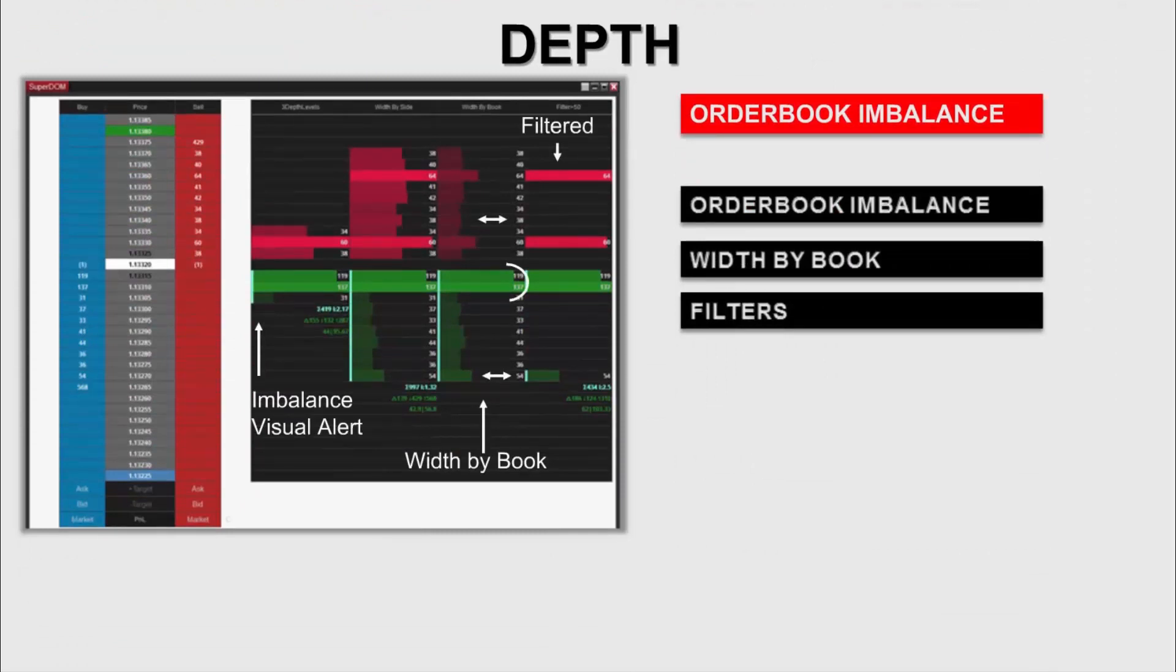Besides the visual imbalance alert, shown in a light green blue color at the left, we can also use the option width by book.